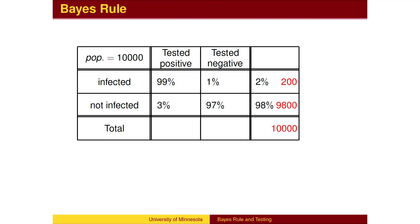When the 200 infected individuals are tested, 99% of them — 198 — will test positive. For two individuals, the test is incorrect and shows that they are healthy.